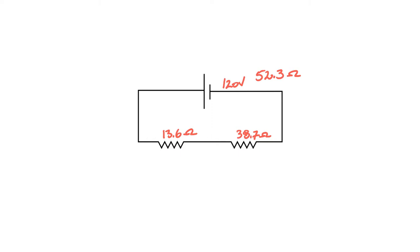From there we can get our current. I'm just going to go 120 divided by 52.3, and I get a current of 2.29 amps. Let me just change my pen color here so it looks a little easier.